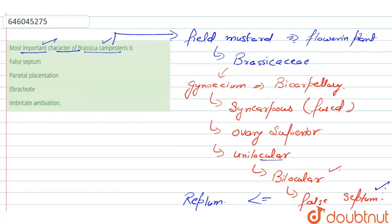So the right answer for our question is false septum, that is replum. Talking about the rest of the options, the second is parietal placentation. Here, parietal placentation is present in Brassica, and this contains a bilocular condition, which means that it has two locules.